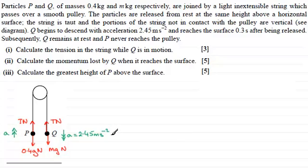Okay, so we should be in a position to do the first part now: calculate the tension in the string while Q is in motion. All we've got to do is consider particle P. If we were to consider particle Q, it would have two unknowns, T and mg, but if I consider particle P I've just got the tension T as the one unknown. So I'm going to resolve in the direction of motion, upwards, taking upwards as positive, and I'm going to consider particle P.